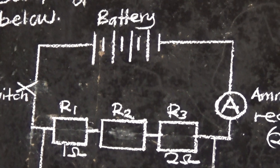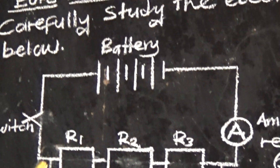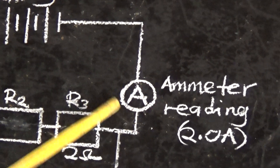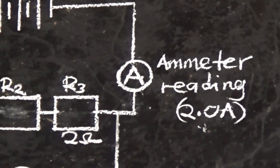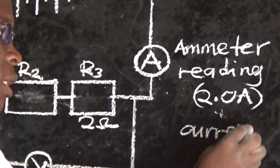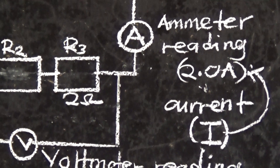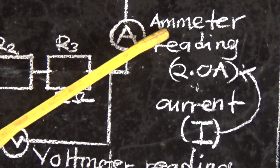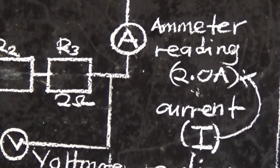This electric circuit has a battery. Then we have our ammeter — an instrument which measures electric current. So this is current: 2.0 amps. This is our current, and this is our ammeter reading 2.0 amps. So this is our electric current.